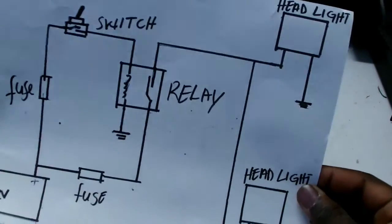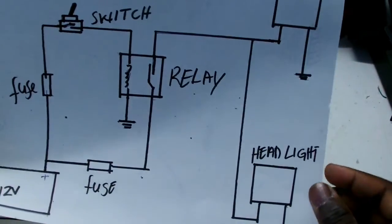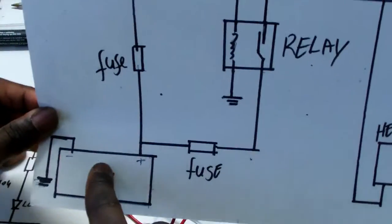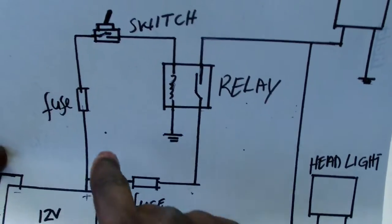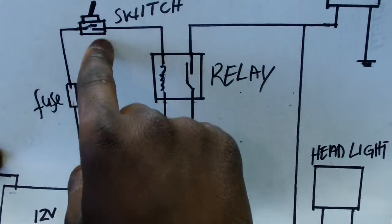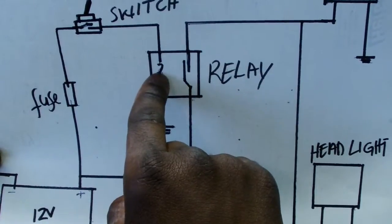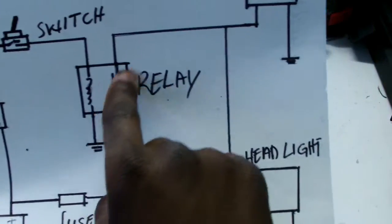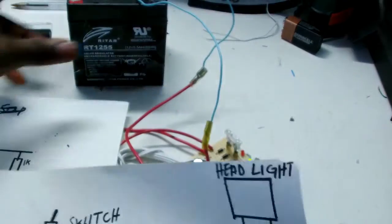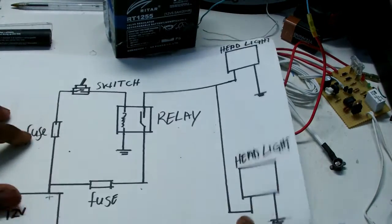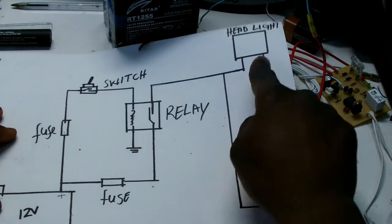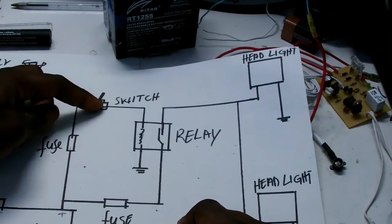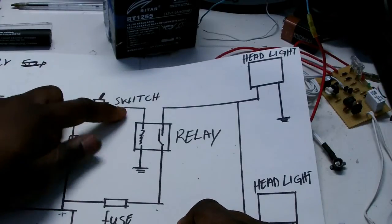This is normally how a car works. These are headlights, two headlights, a relay here, and a switch, and a fuse and a battery. So when the switch is closed here, the power goes all the way, magnetizes the relay. The relay makes a contact here, so that means the power can flow all the way to the two headlights. When you switch it off, it's open. The power can't go through, the fuse and the relay is off.